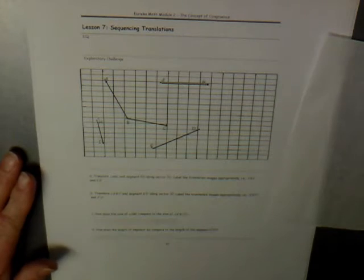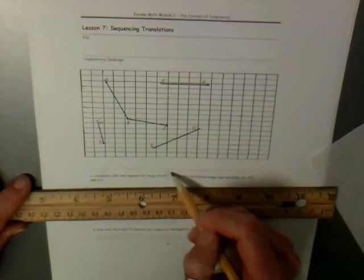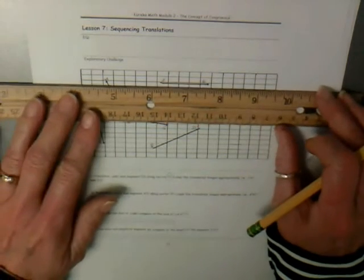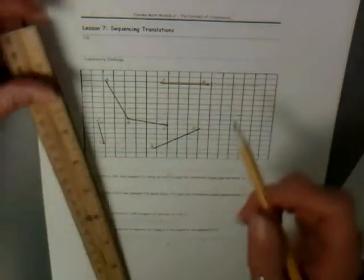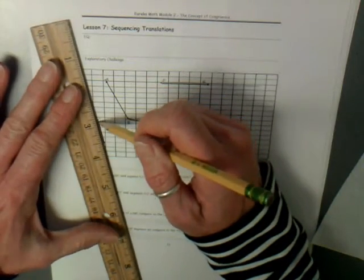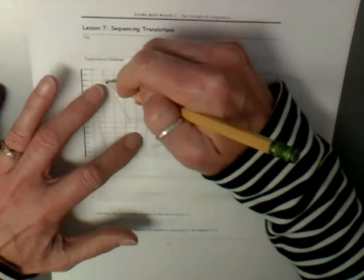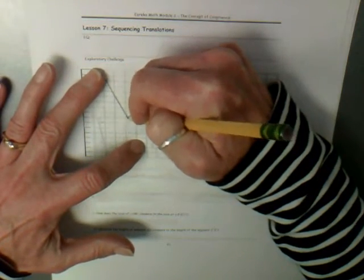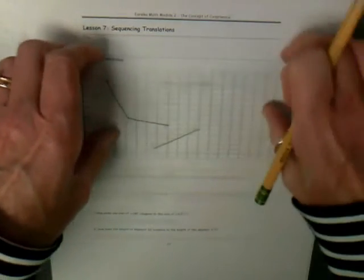In order to do our translation, the first thing I'm going to do is extend the vectors. Vector FG is right here, so I'm going to extend it. I'm also going to extend vector HI. Then I take my tracing paper and place it over the figure and sketch angle ABC and segment ED. Then I turn my paper over and darken the backside of the tracing paper.